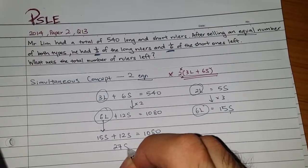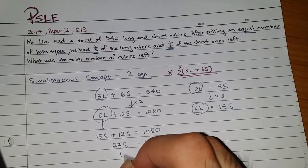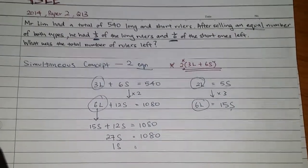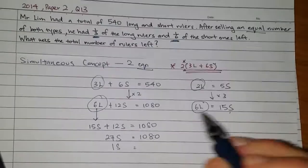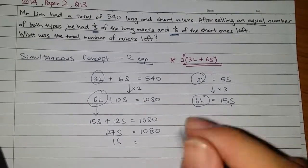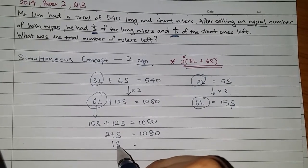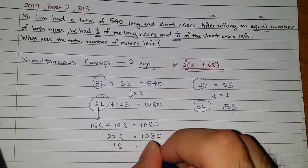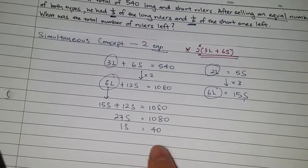Okay, 1080. So, 27S is equals to 1080. And then if I divide them, I should get 1 short, I should get 1080 divided by 27. Oh no, I don't have a calculator near me. So, let me do my mental calculation. It's times 4. Yes, 40. 1080 divided by 27 is 40. So 1 short is 40.